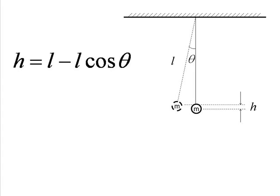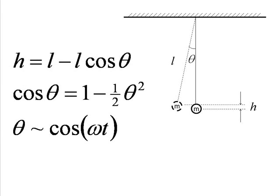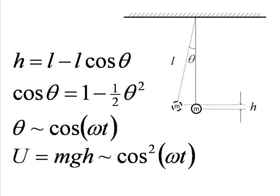The gravitational potential energy is determined by the height above the zero potential point, which we will define to be the bottom of the pendulum's swing. This can be calculated based on the trigonometric relationships. Again, with the small angle approximation, the cosine can be rewritten. From the solution of the angular acceleration differential equation, the angle is given as a function of a cosine. The gravitational potential energy is therefore a function of the square of the cosine term.